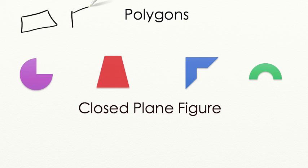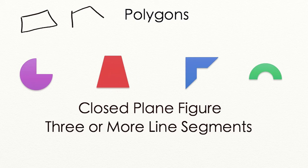But if the fence only goes part of the way around and doesn't finish, then it's an open plane figure. So a polygon has to be a closed plane figure. Next, a polygon has to have three or more line segments. So it can't have any rounded edges or twists or turns to it. It has to only be line segments.